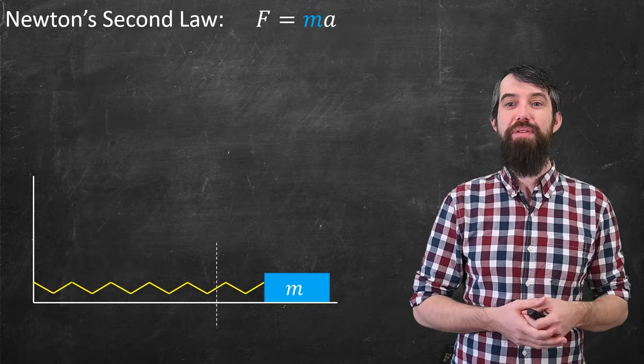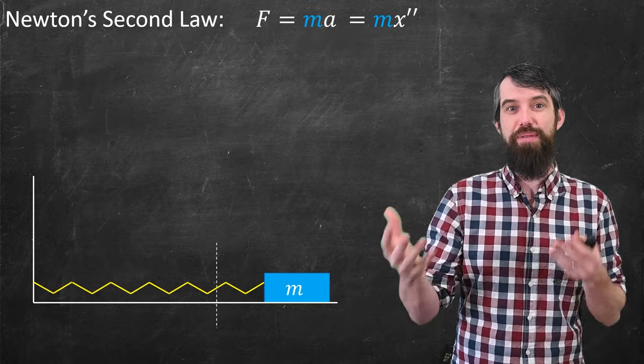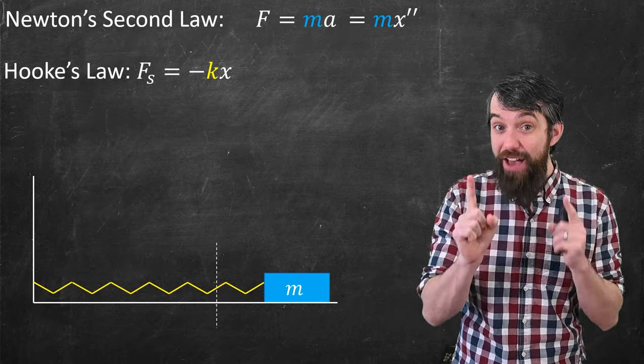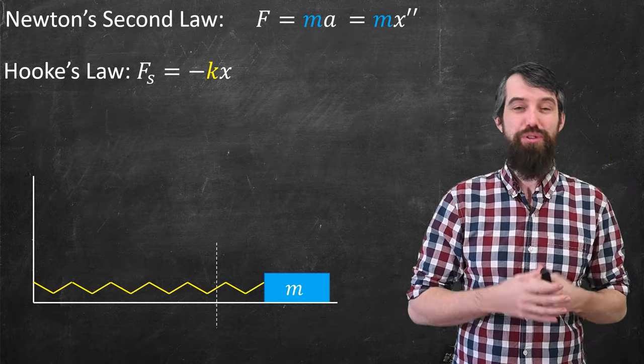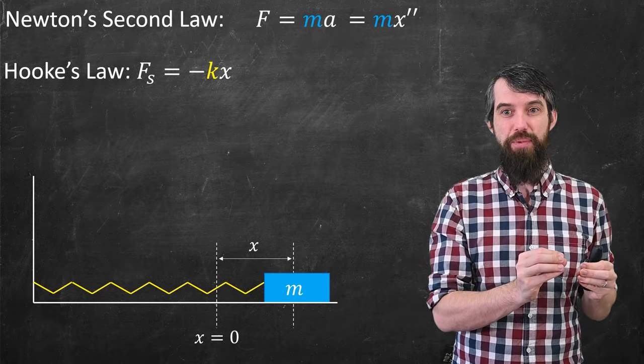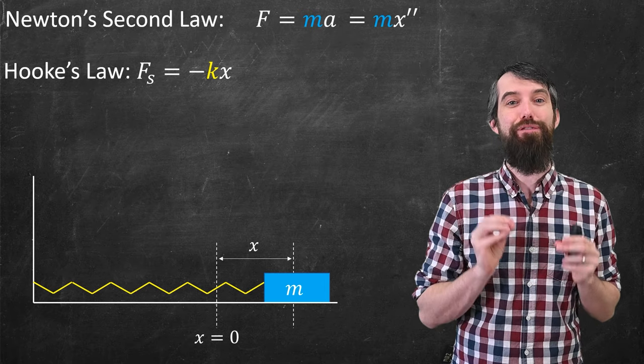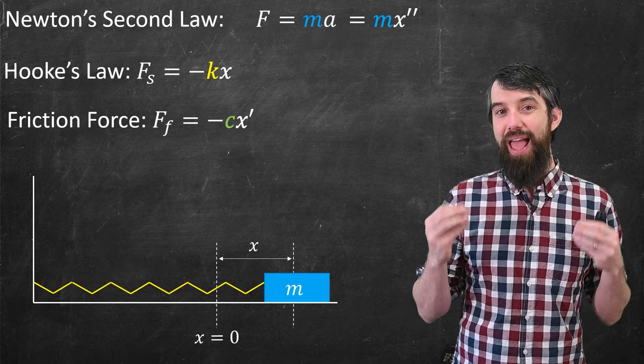We had previously described how by Newton's law, there was a force's mass times acceleration or mass times x double prime. We talked about Hooke's law, which I will now call Fs for the spring force, since there'll be a couple different springs, which was negative kx, where x here was the displacement from the equilibrium. And now I'm going to add in a third thing, and that is the force of friction, or a damping force.